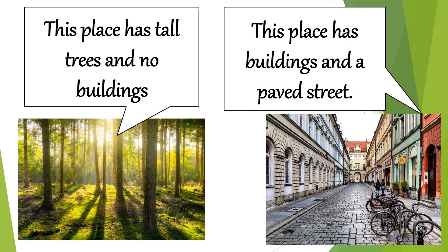Let's look at the first picture on the left. It says this place has tall trees and no buildings, and what we can see in the picture — yes, there are lots of trees and sunlight coming through the trees, definitely no buildings. We can maybe call this a forest. The other picture says this place has buildings and a paved street — we don't see even any trees, not even one. So this must be a town or a city.